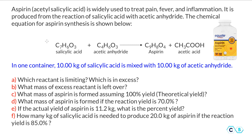This is a comprehensive problem on stoichiometry, where we need to determine everything from the moles of the reactants, the limiting reactant, and the percent yield, which is addressed in two or three different formats. The problem is about synthesis of aspirin, which is otherwise called acetylsalicylic acid, and it is synthesized from salicylic acid and acetic anhydride, considering 10 kilograms of each reactant is mixed in one container.